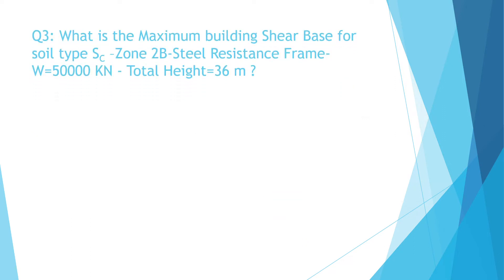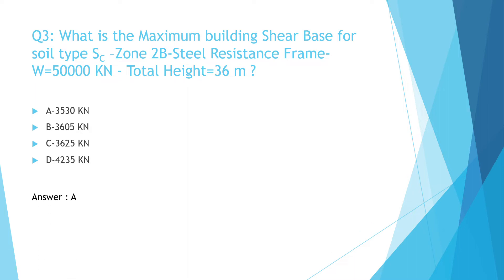Question number three. What is the maximum building shear base for soil type SC, zone 2b, steel resistance frame, W equal 50,000 kN? Options include C: 3625 kN and D: 4235 kN. The correct answer is A: 3530 kN. The steps of solution are shown.